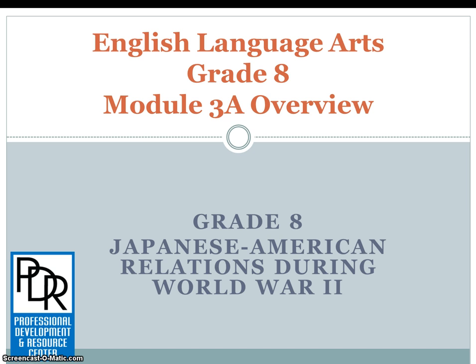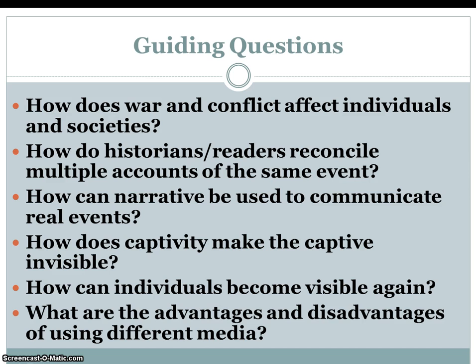This module focuses on Japanese-American relations during World War II. The guiding questions are: How does war and conflict affect individuals and societies? How do historians and readers reconcile multiple accounts of the same event? How can narrative be used to communicate real events? How does captivity make the captive invisible, and how can individuals become visible again? What are the advantages and disadvantages of using different media?